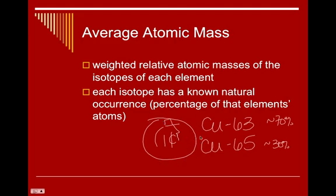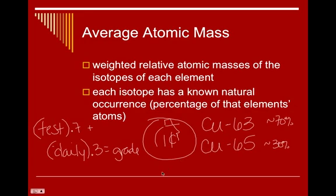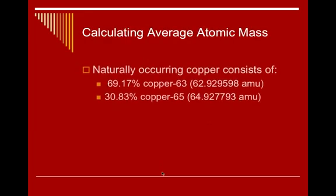Well, if you wanted to know the mass of the copper in here, you would have to find a weighted average, just like when you calculate your grade for my class. You take your test average and multiply it by 0.7 and then you add to that your daily average and multiply it by 0.3 to come up with your class average, your grade. You have to do the same thing here.